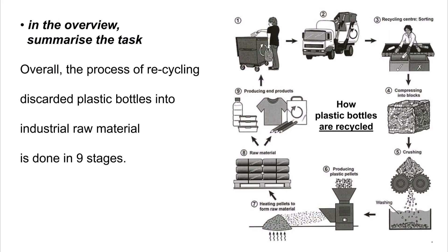In the overview, summarize the task. Overall, the process of recycling discarded plastic bottles into industrial raw material is done in 9 stages.